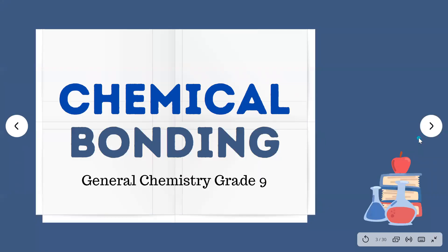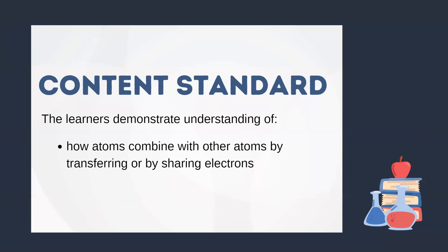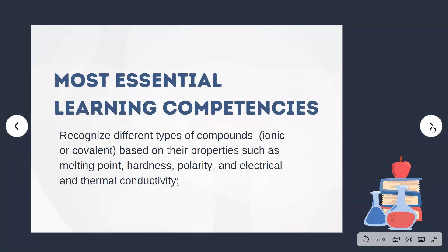Today, we will be talking about chemical bonding. Here is the content standard of this lesson: the learners demonstrate understanding of how atoms combine with other atoms by transferring or by sharing electrons. The most essential learning competency would be recognizing different types of compounds — ionic or covalent — based on their properties such as melting point, hardness, polarity, and electrical and thermal conductivity.